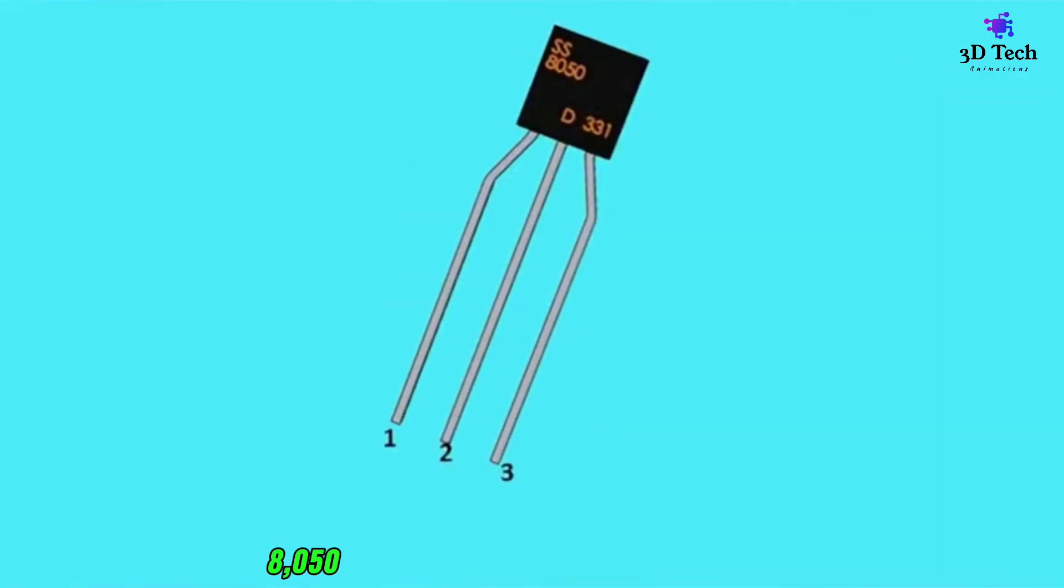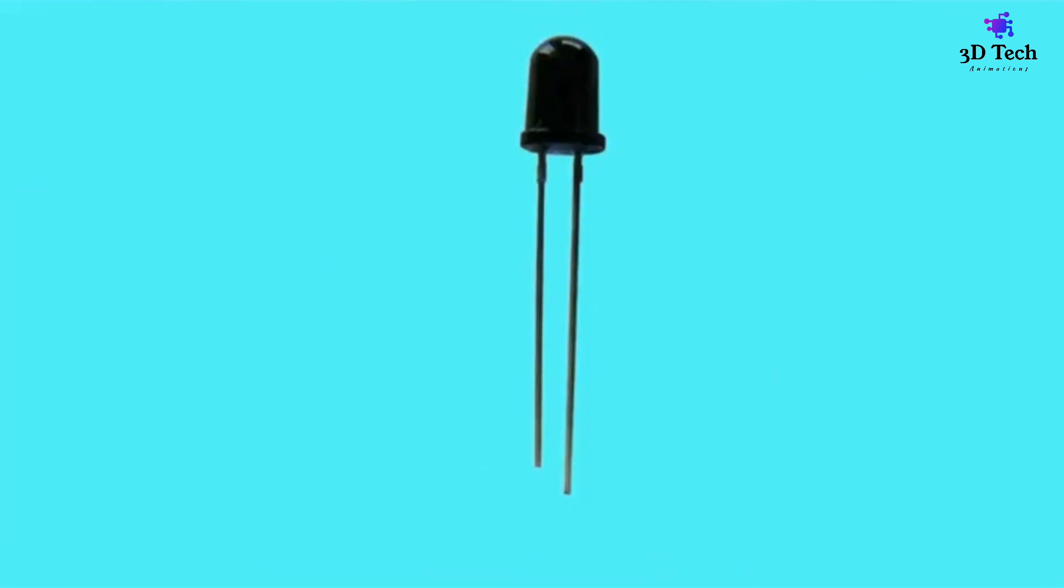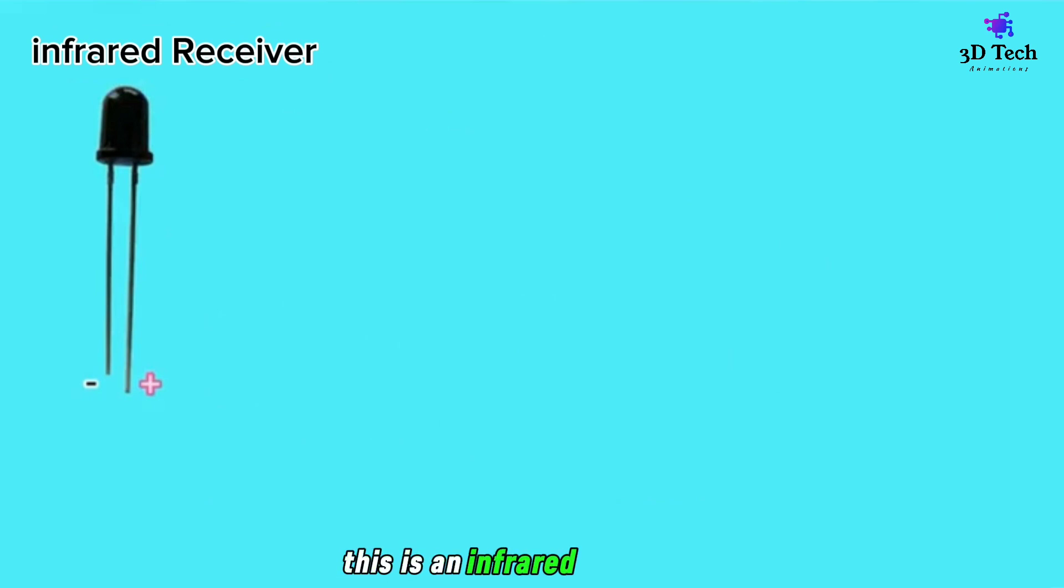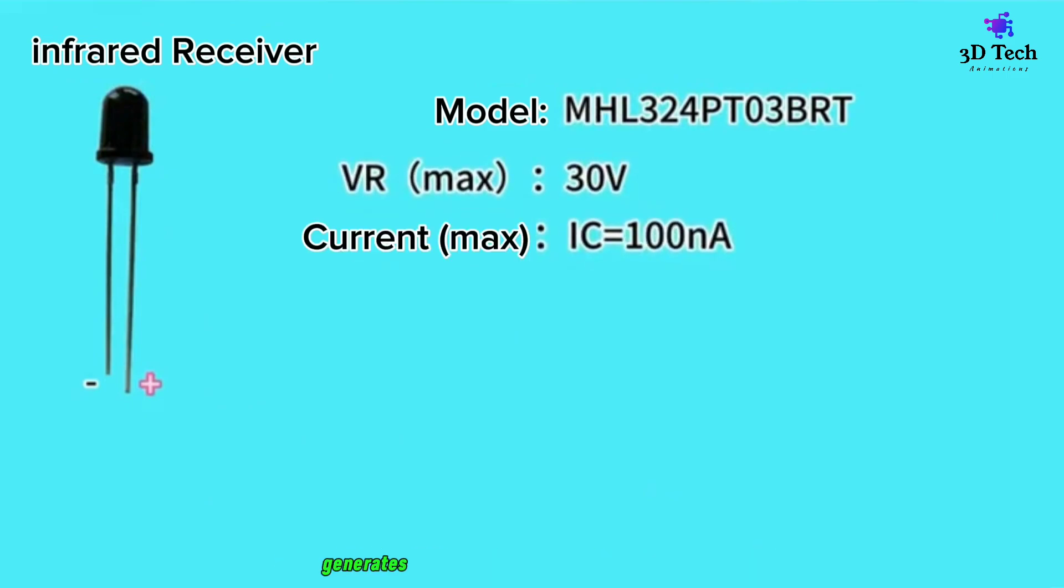Let's take a look at the working mechanism of the infrared receiver. This is an infrared receiver of model MHL32 for PTO3 BRT. Its maximum reverse voltage is 30 volts and generates 100 nanoamps of current without infrared light.